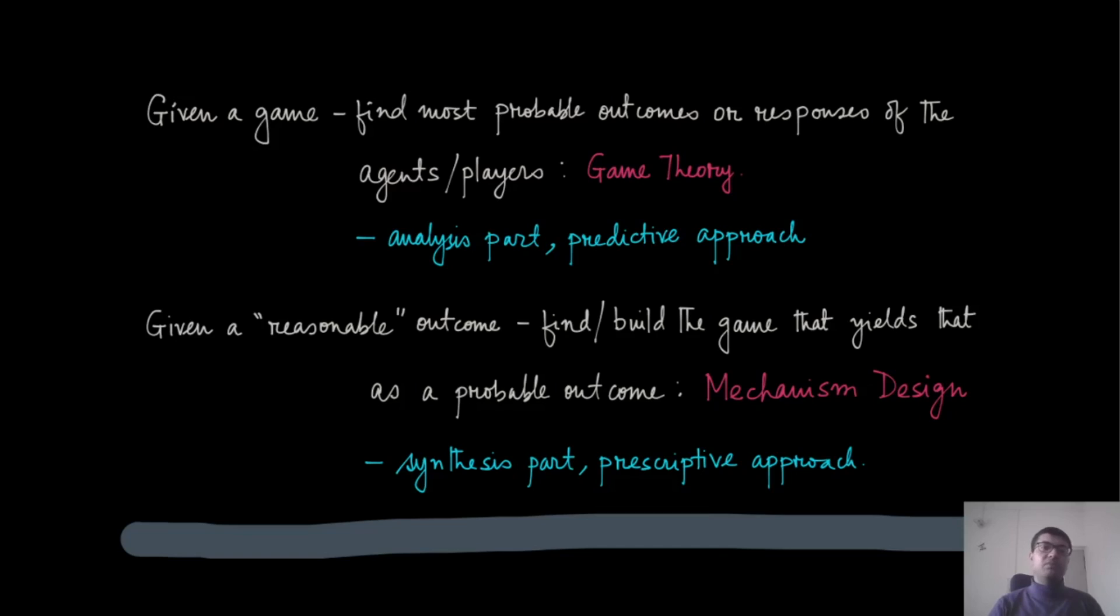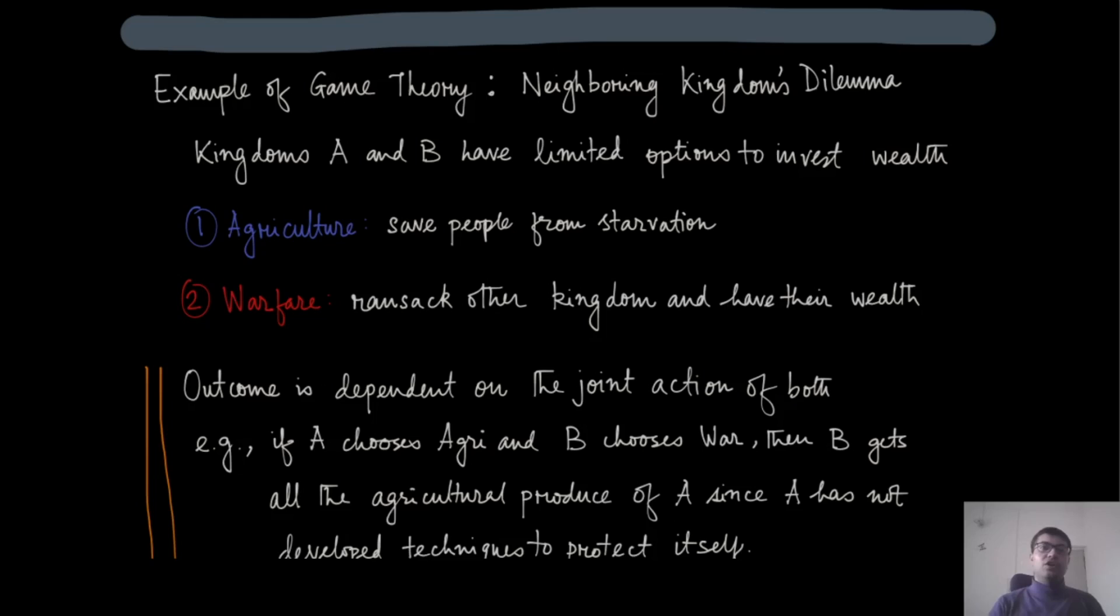In the mechanism design component, we actually flip the question. We start with a reasonable outcome and try to design or build the game that yields such reasonable outcomes as a possible outcome—possible in the sense as the predictive outcome if we analyze that game. Quite naturally, this is the synthesis part, and the approach that we are going to take here is more prescriptive.